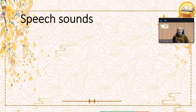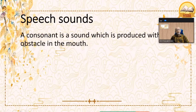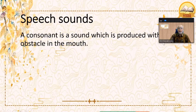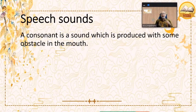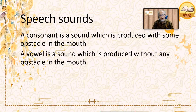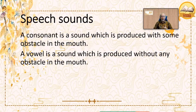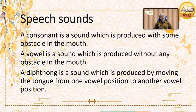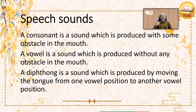Before we talk about production, it's necessary to talk about what a consonant, a vowel, and a diphthong is. A consonant is a sound which is produced with some obstacle in the mouth — there is a hindrance so that the air does not go freely through the mouth. A vowel is a sound which is produced without any obstacle in the mouth, so the air goes through freely. A diphthong is a sound which is produced by moving the tongue from one vowel position to another vowel position.